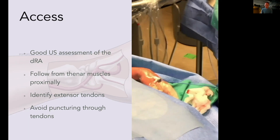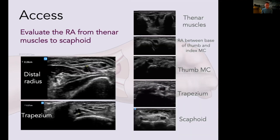Once you have your sheath in and your wire is tracking, the case is no different from conventional radial access. I'm only discussing access in this talk. One key point I'll address later is the difference in size — but essentially there is no difference. You can see here: the same patient's distal radial artery measures 0.27 and conventional 0.28.